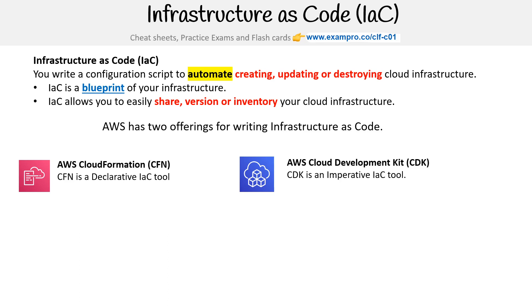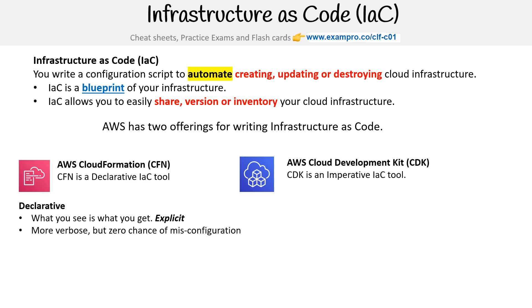So let's talk about the difference between declarative and imperative, and then we'll look at these tools a little bit closer. Declarative means what you see is what you get — it's explicit, it's more verbose, but there is zero chance of misconfiguration unless the file is so big that you're missing something. Commonly, declarative files are written in things like JSON, YAML, or XML. For CloudFormation, it's just JSON and YAML.